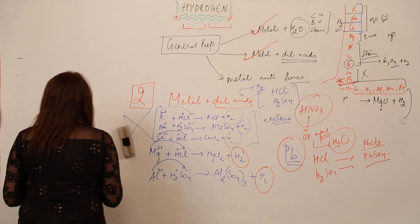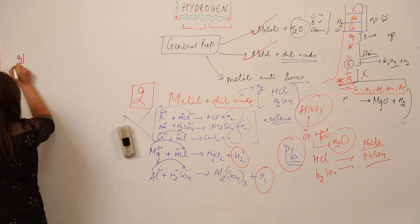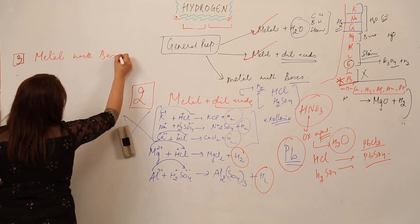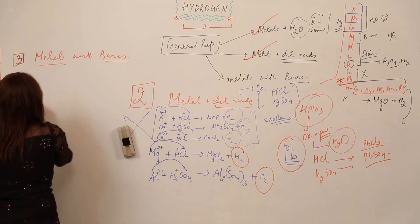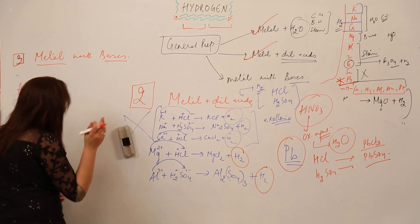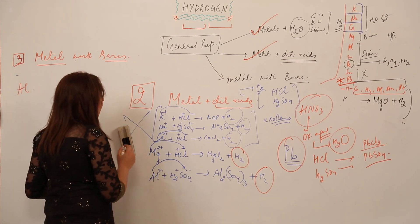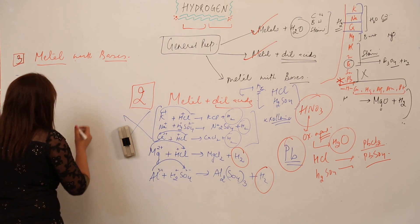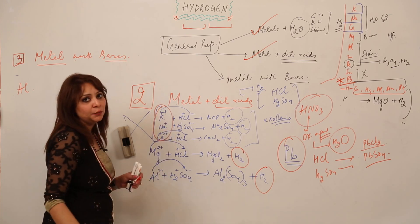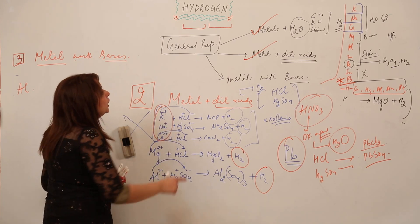The third method is the reaction of metal with bases. For example, I'm taking aluminum. In the same way, when we react with them, we are not using these elements.